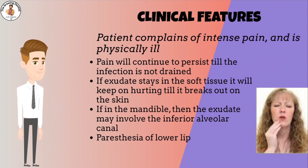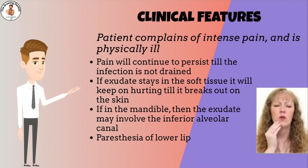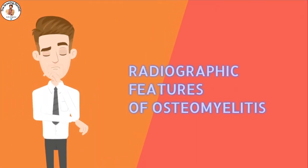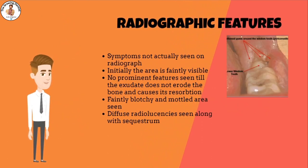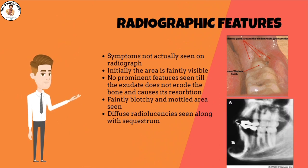If it is in the mandible, the exudate may involve the inferior alveolar canal, causing alteration in nerve conductivity and leading to paresthesia of the lower lip. On the radiograph, symptoms are not actually seen since the infection is in the soft tissue. Initially, the area is faintly visible because of initial spread in soft tissue, and no prominent features can be seen until the exudate erodes the bone and causes resorption. Initially, a faintly blotchy and mottled area is present at the site of inflammation.